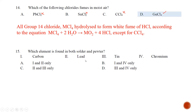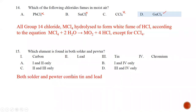Question number fifteen: which element is found in both solder and pewter? Solder and pewter are mixtures of lead and tin, so you need to memorize which alloys they are made of. The answer is C.